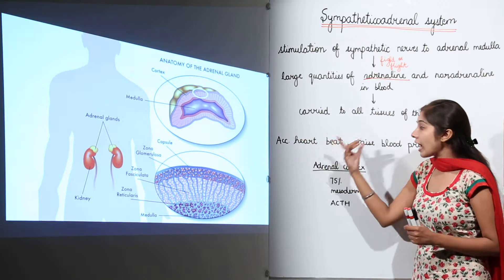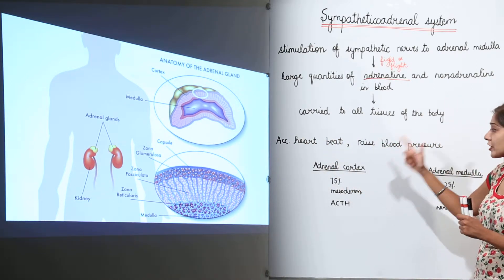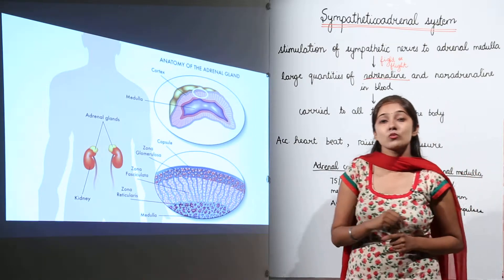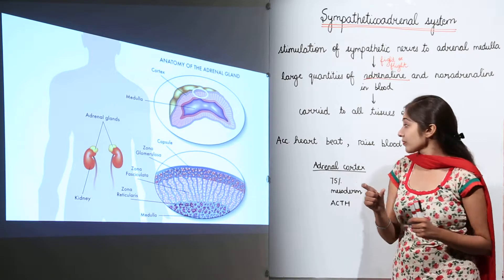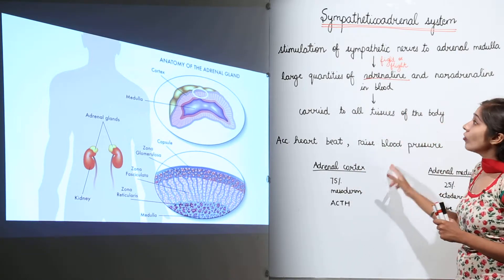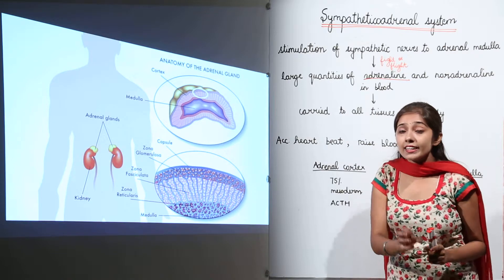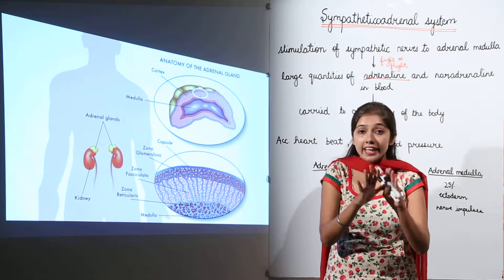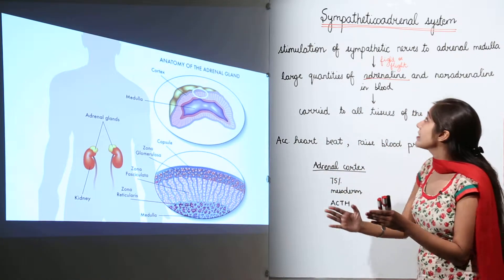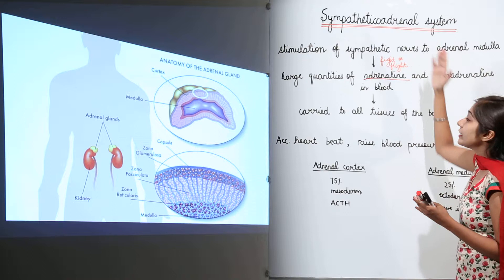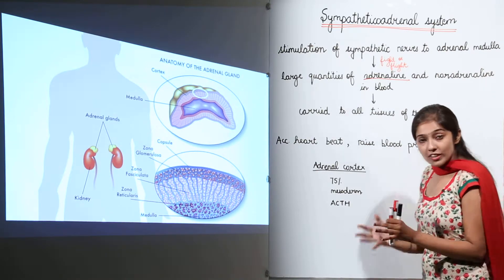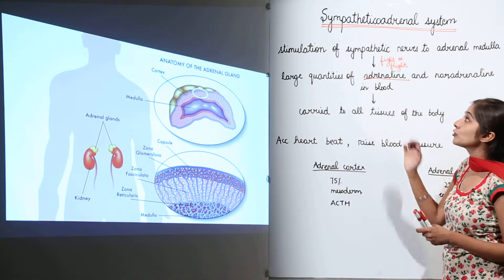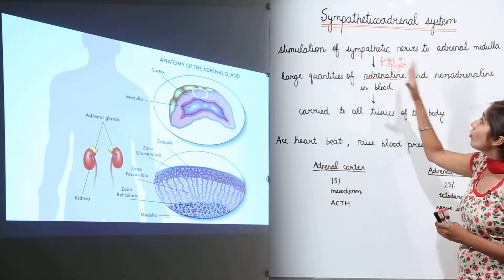The effects include acceleration of the heartbeat and raising of the blood pressure — these are the effects produced when this emergency hormone is released during emergency situations. As a whole, the sympathetic nervous system and the adrenal medulla integrate together, and this integrated system is called the sympathicoadrenal system because they work together and produce effects together.